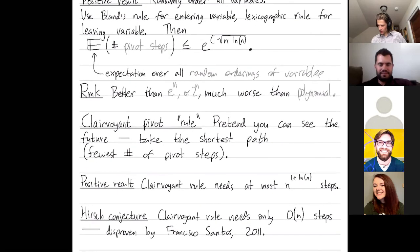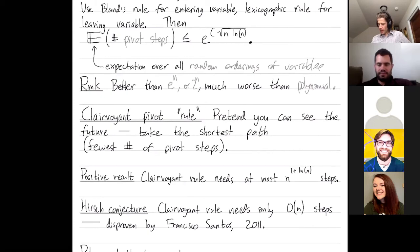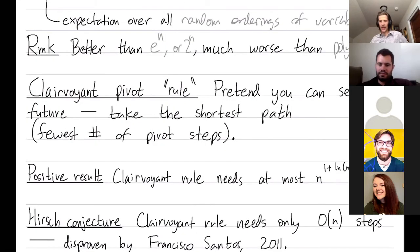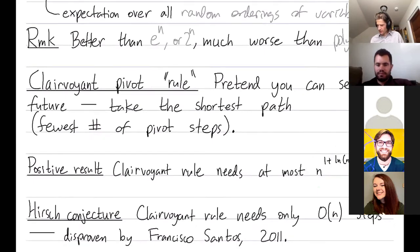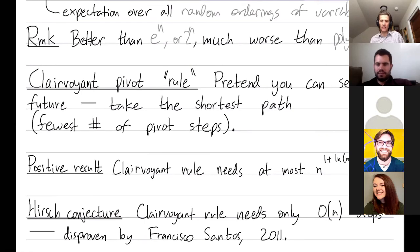All right, so a positive result is that the clairvoyant rule needs at most n to the power 1 plus log n steps. So it almost looks like, it's exponential, because I have n appearing in the exponent. It's exponential, but it's not a bad exponential. There's a famous conjecture in mathematics, which has been disproven after our book was written, but the Hirsch conjecture was the conjecture that the clairvoyant rule really only needed an order of n steps. So the Hirsch conjecture was that you could replace this with n to the power of 1 instead of 1 plus log n.